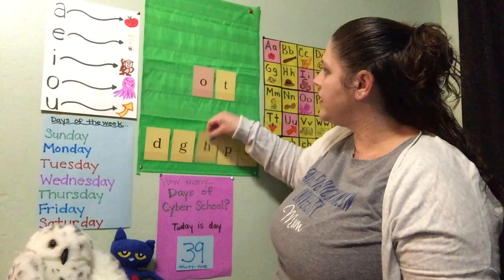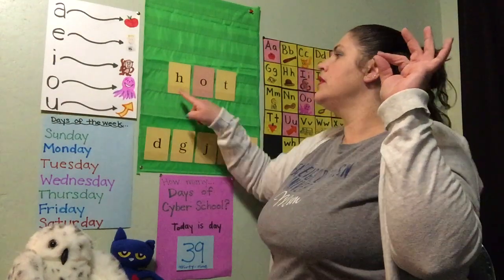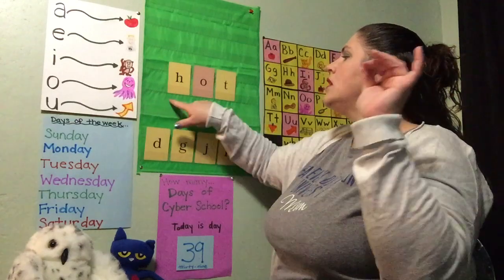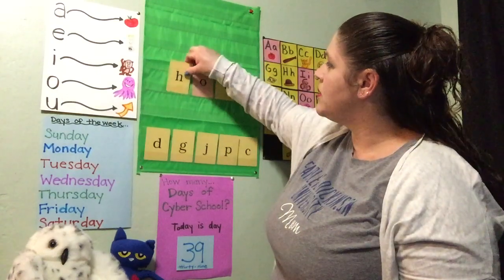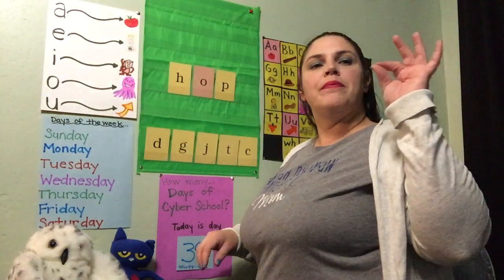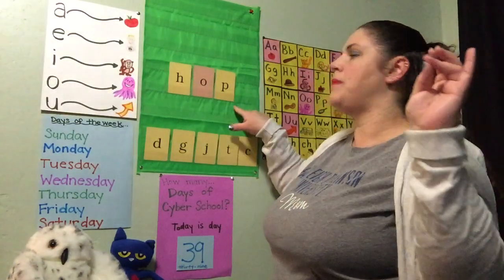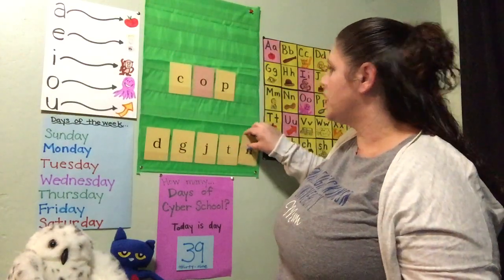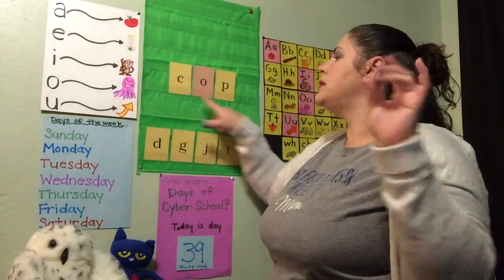And I'm gonna change that beginning letter to make a new word — we're still keeping "ah" in the middle. Elbow up, thumb and pointer finger together. H, ah, t — hot. One more time: H, ah, t — hot. I'm gonna change that ending sound and give us another new word. H, ah, p — hop. One more time: H, ah, p — hop. Nice job. And let's change that beginning sound to make one more new word. K, ah, p — cop. One more time: K, ah, p — cop.